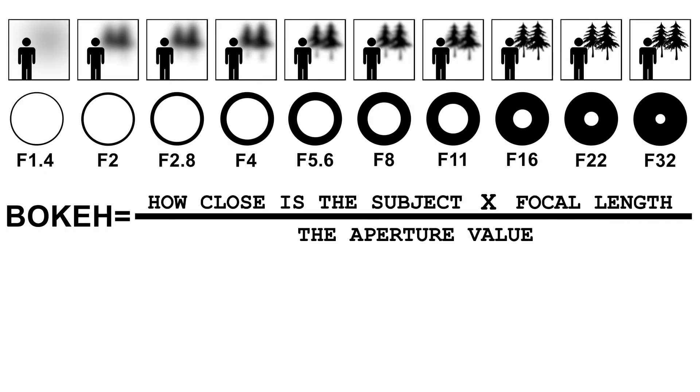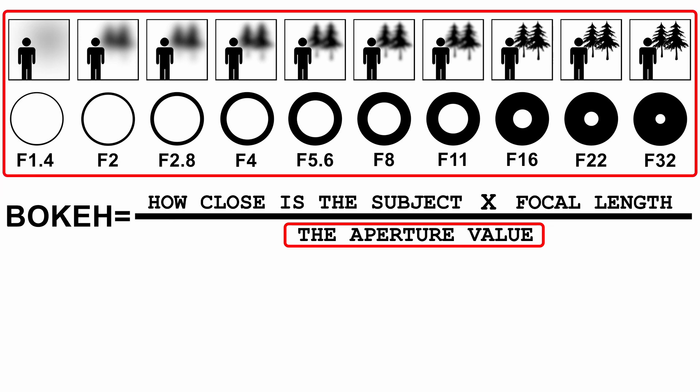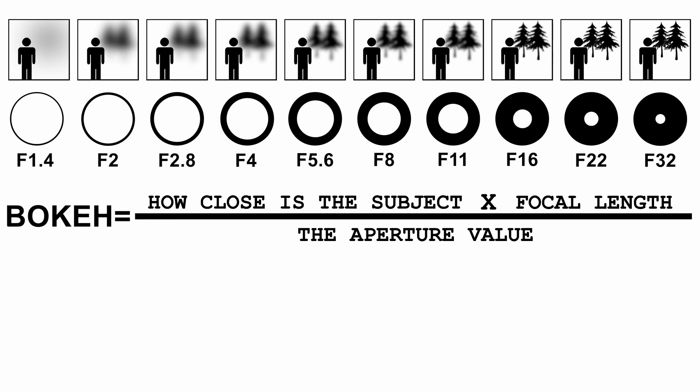On the bottom we have the aperture value — the third aspect that influences our blurry background. As I showed you at the beginning of this clip, everything is pretty straightforward there. But there is one more thing to add to the formula, and that is sensor size. This will make things a bit more complicated.